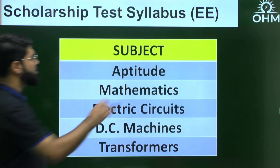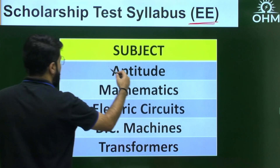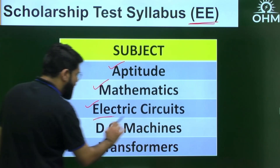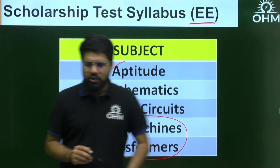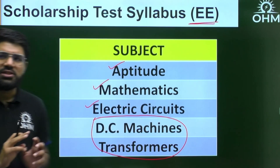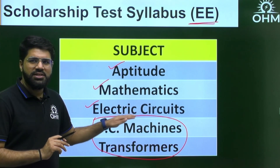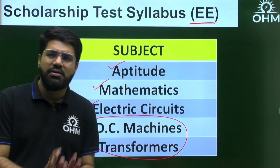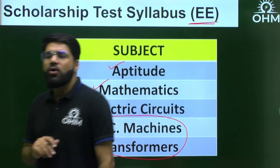For EE (Double E) students, the common subjects are Aptitude, Mathematics, and Electric Circuits (Networks). For core subjects, DC Machines and Transformers are included — two topics from Electrical Machines. The GATE syllabus has four parts of Electrical Machines, but we've taken two so that second-year students can also attempt this foundation test comfortably.